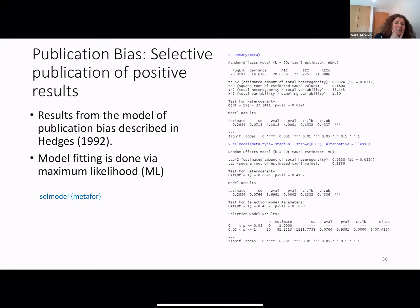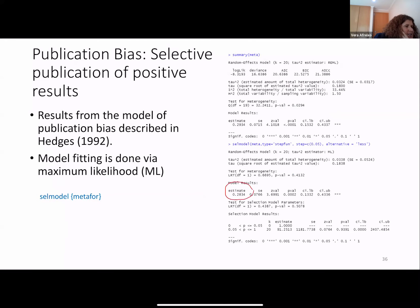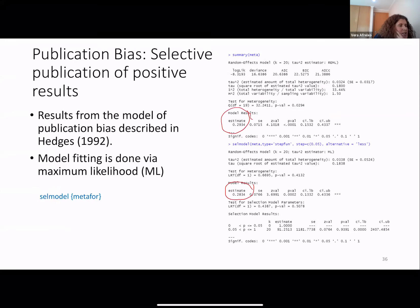For the example scenario, when we include the publication pressure in the model, we obtain a lower effect size — the original non-adjusted effect size is lower — but the confidence interval does not include zero. So the overall effect, considering this result, could be considered as significant.